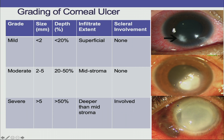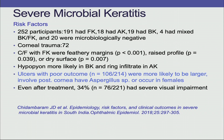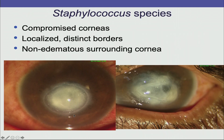The grade is important because it dictates your treatment modality, whether it is bacterial keratitis or fungal keratitis. Ulcers with a poor outcome are more likely to be larger, involve the posterior cornea, have Aspergillus species, or occur in females — this is from a study looking at risk factors for severe microbial keratitis.